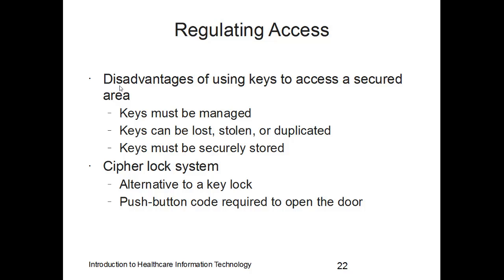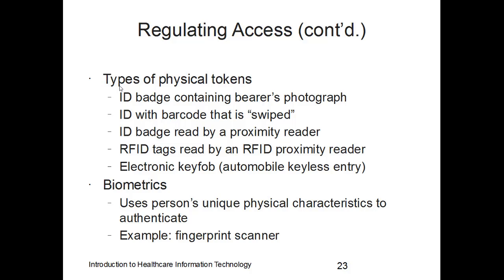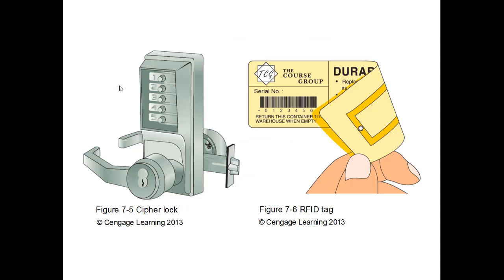An alternative is a cipher lock system — a push-button code where you enter a series of numbers to open a door. You can also use physical tokens to regulate access, such as an ID badge with the person's photograph, a barcode ID badge swiped to open a door, an ID badge read by a proximity reader, an RFID tag read by a proximity reader, or an electronic key fob for keyless entry.